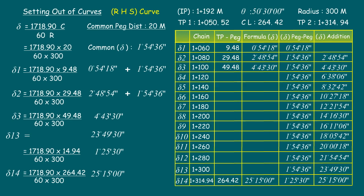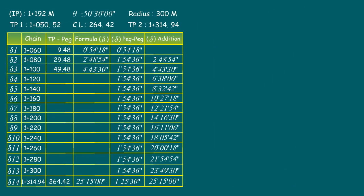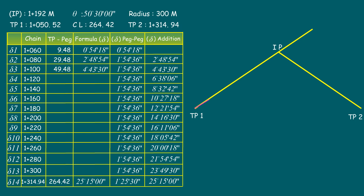Now let us fix the curve on site. Set up the theodolite on tangent point one, bisect the intersection point, and fix the instrument reading at zero. Start measuring the distance from one peg to another as given in the table, fix the delta values in the instrument, and fix every peg accordingly until we reach tangent point two. This completes the setting out details of a simple curve.